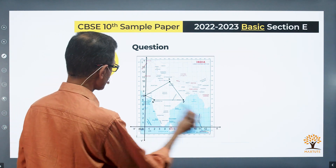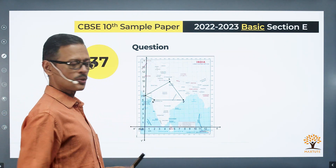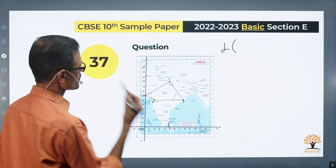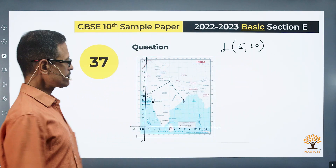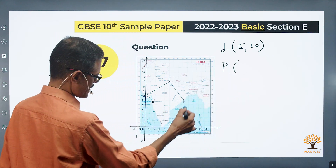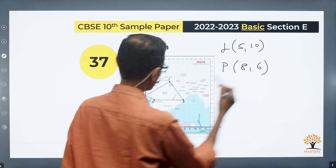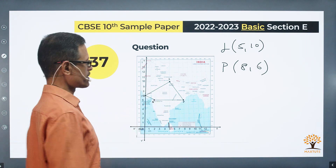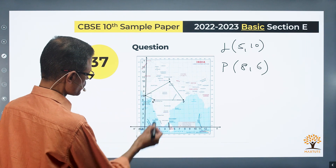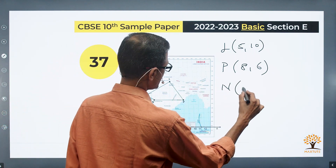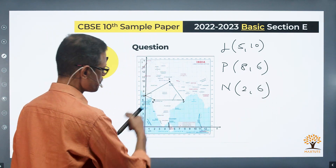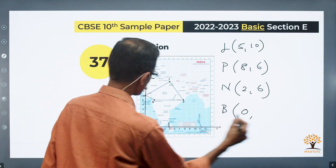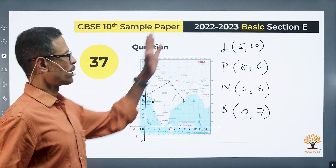Let's note down the coordinates. On the x-axis and y-axis: coordinates of Lucknow are (5, 10). Coordinates of Puri are (8, 6). Nashik has x-coordinate 2 and y-coordinate 6, so Nashik is (2, 6) — it's on a line parallel to the x-axis. Lastly, Bhuj is on the y-axis, so x-coordinate is 0 and y-coordinate is 7, giving (0, 7).